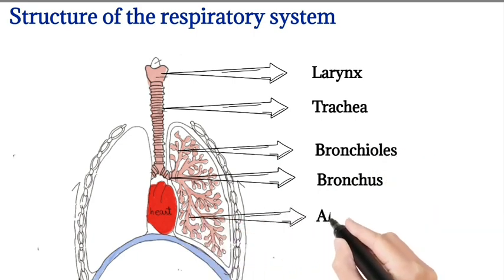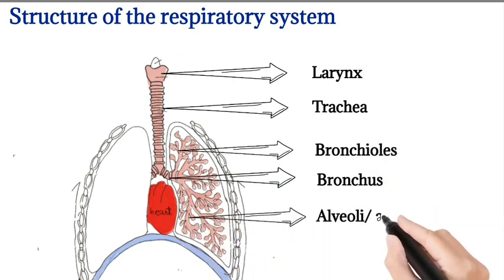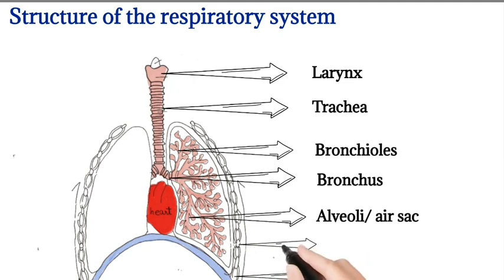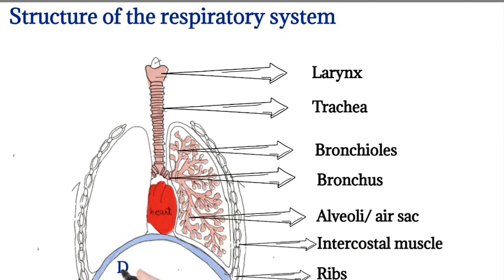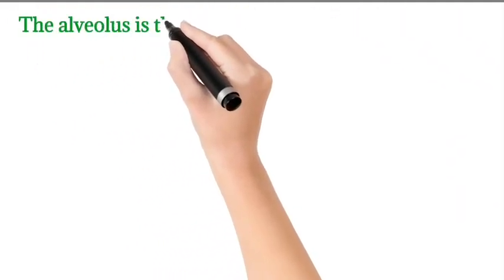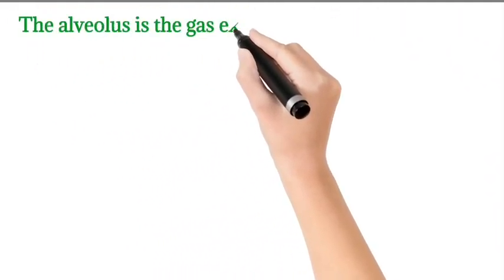There is an air sac situated at the end of the bronchioles, and there are ribs and intercostal muscles, and there is a dome-shaped part which is called the diaphragm.